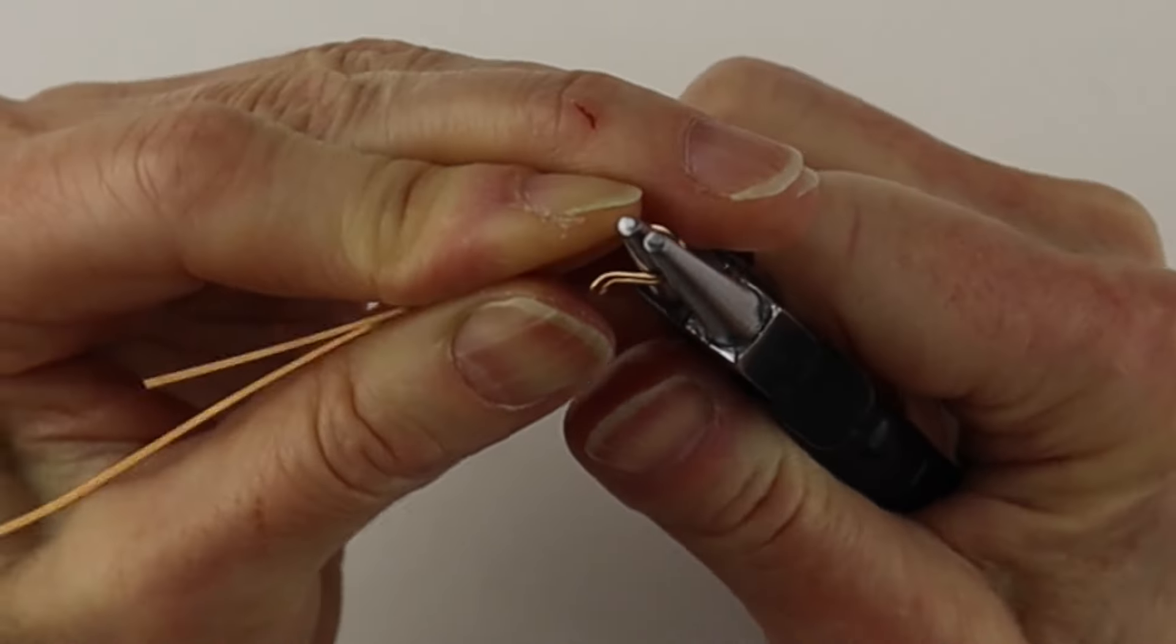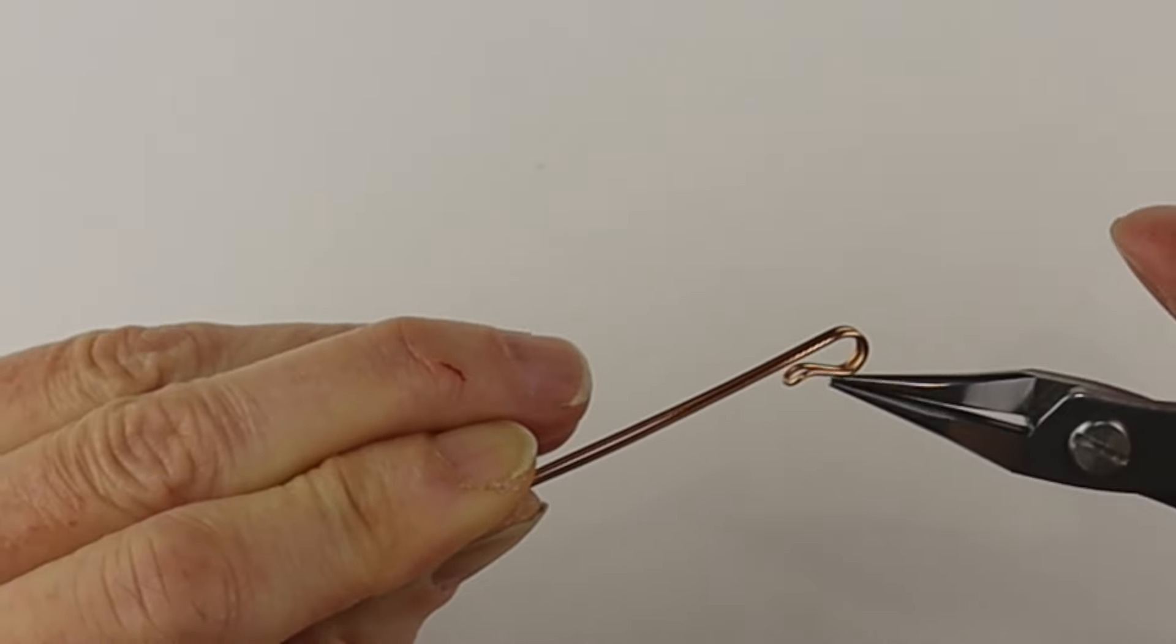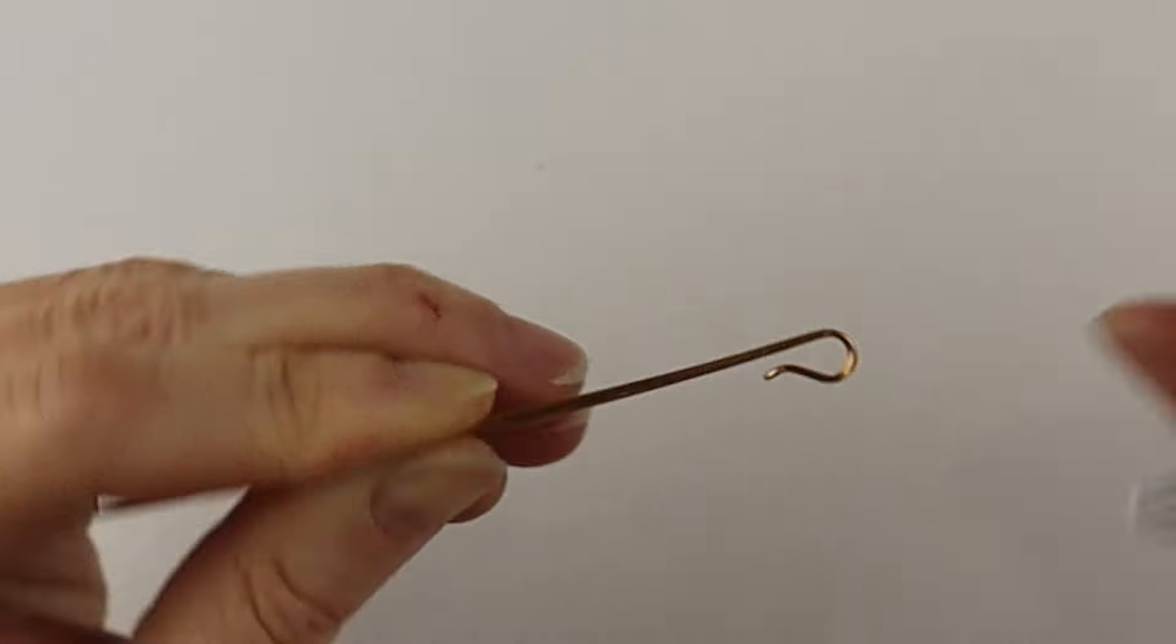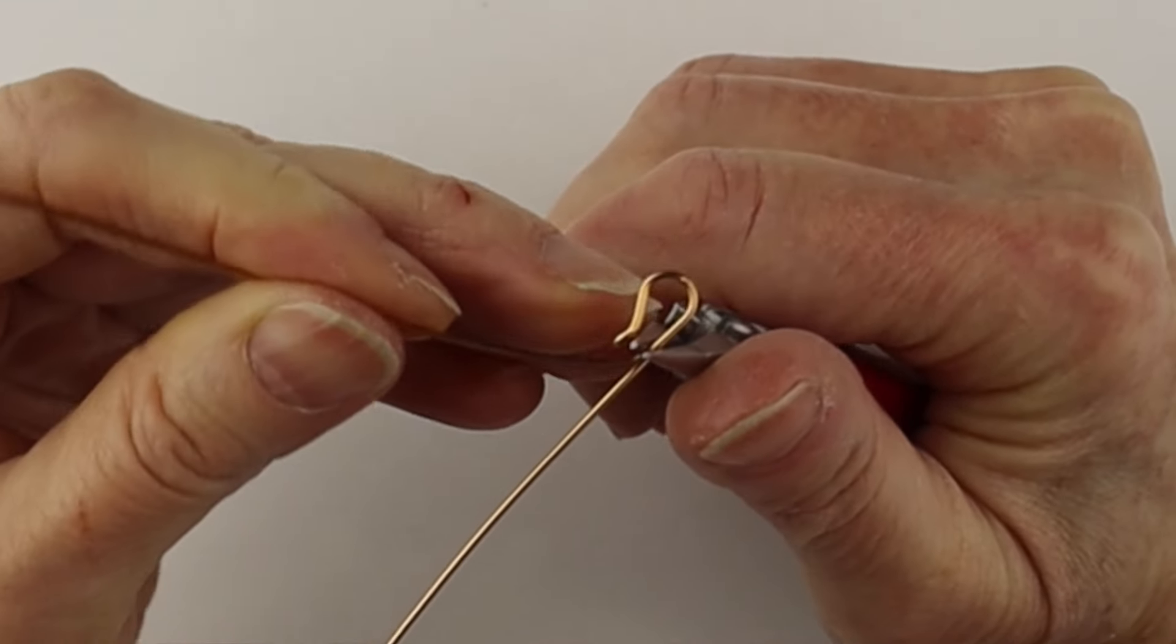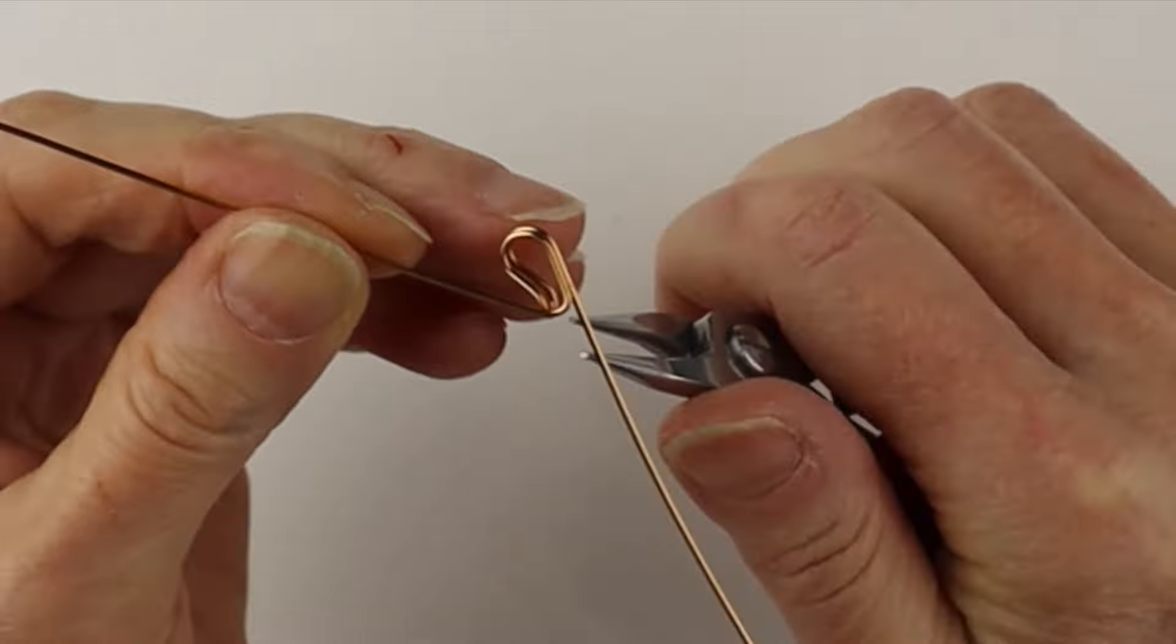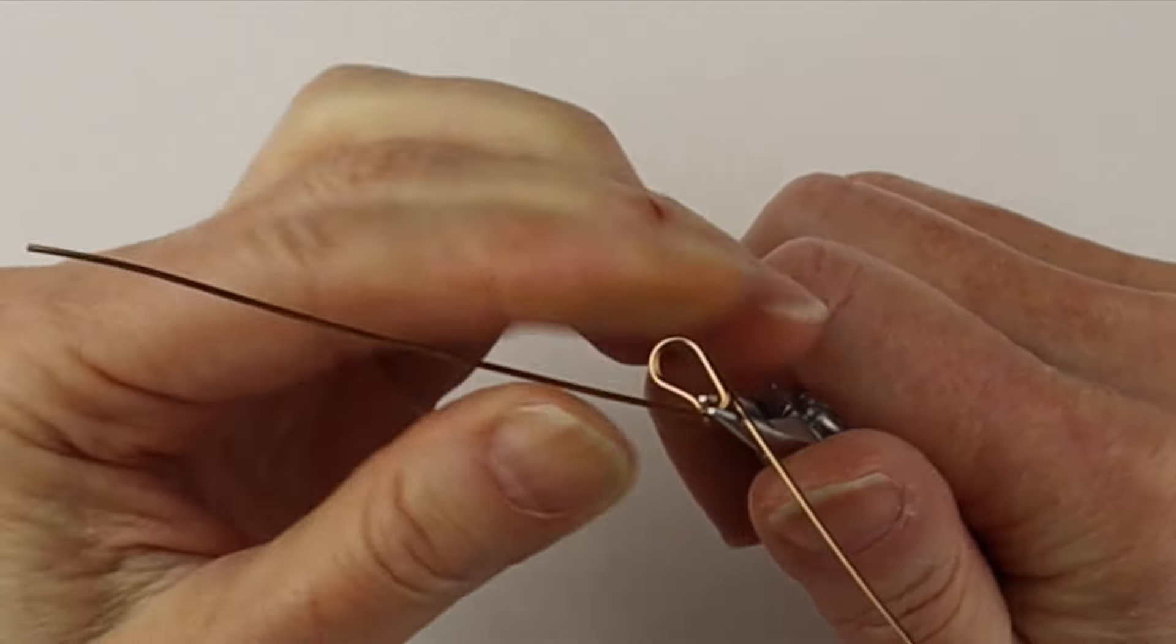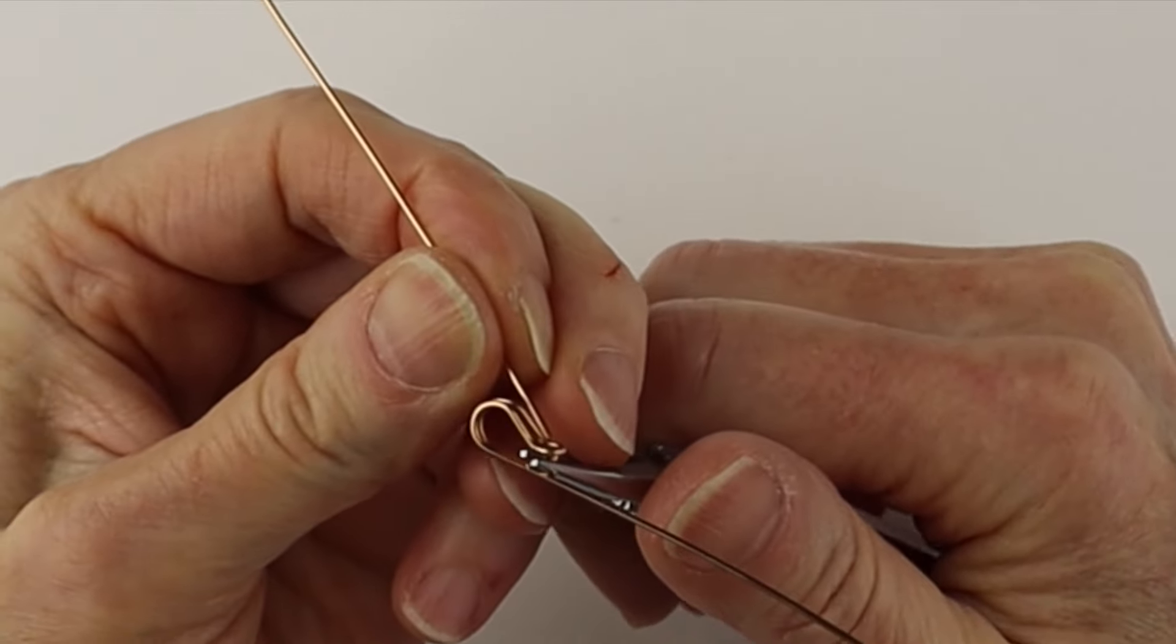So this is our starting point. Then we want to do a loop just underneath there. Take your round pliers, start the loop here. You can adjust it a bit. We might have to move it up a little bit. Just hold that and bring it around.